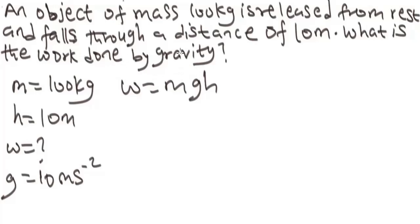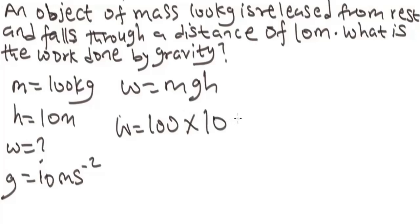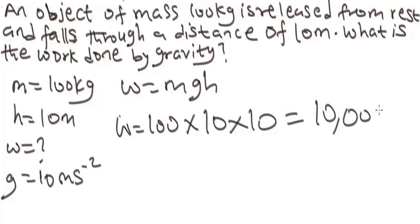Since the object is falling, it responds to gravity so we use positive 10 m/s². If the object were going up against gravity, the value would be negative. So work done = 100 times 10 times 10, which equals 10,000 joules. That is the answer to this question.